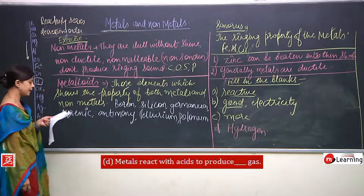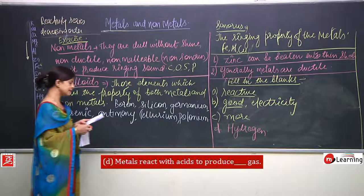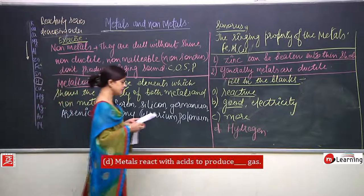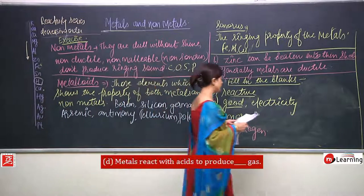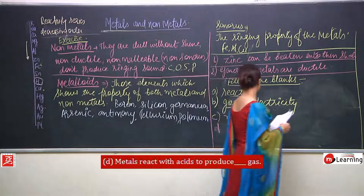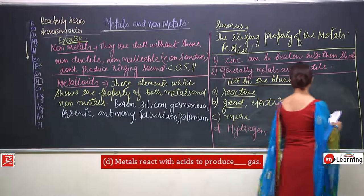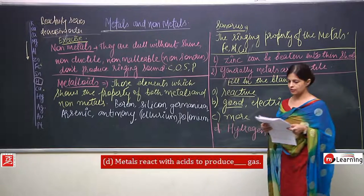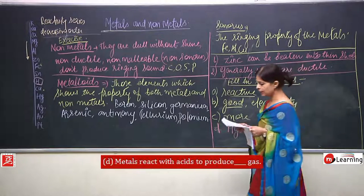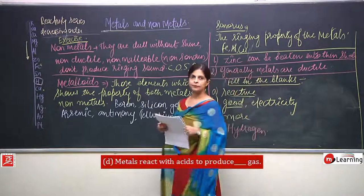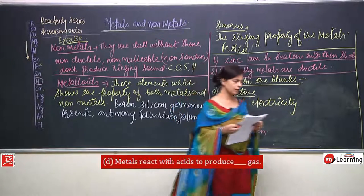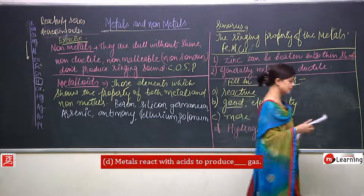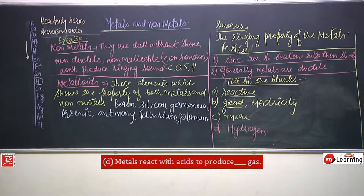To repeat the answers: phosphorus is very reactive non-metal; metals are good conductors of heat and electricity; iron is more reactive than copper from the reactivity series; and metals react with acids to produce hydrogen, as we have seen in the three reactions.